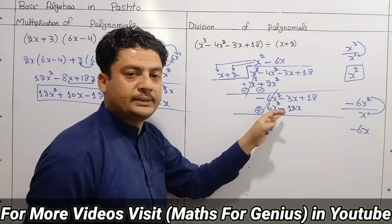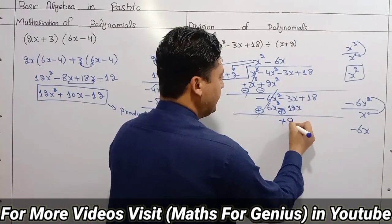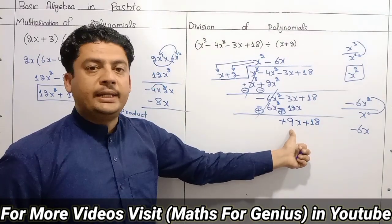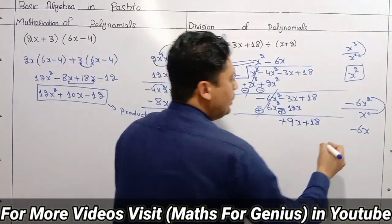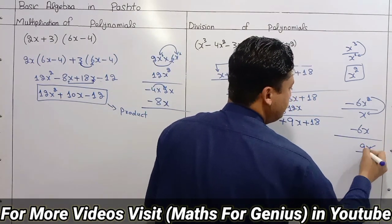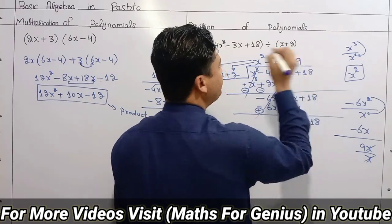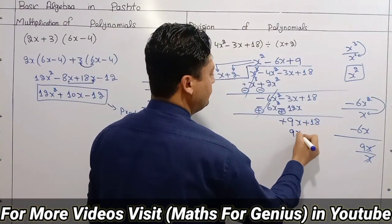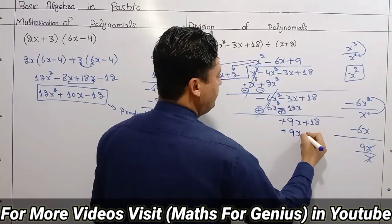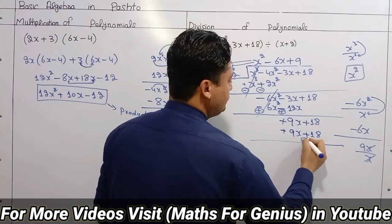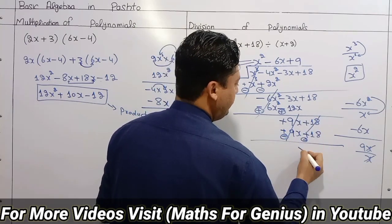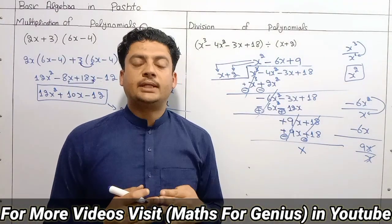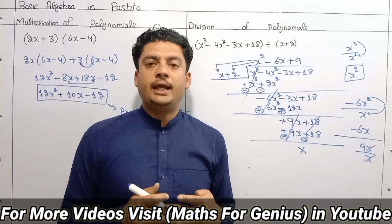Plus plus minus minus gives minus 3. If we have 12 plus we will have plus. Then 3 into 3 gives 9, and 3 times 6 gives 18. If we have 9x, then we divide by x, which gives 9. Then 9 times x gives 9x, plus 18. We change to minus, then cancel. We solve: the quotient is x² minus 6x plus 9. Thanks for watching, like and comment.